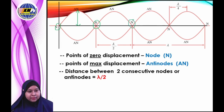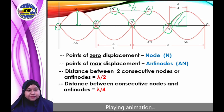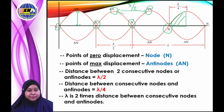The distance from antinode to antinode is lambda over two. The distance between consecutive nodes and an antinode is lambda over four. Lambda is equal to two times the distance between consecutive nodes. You can see this in the diagram.